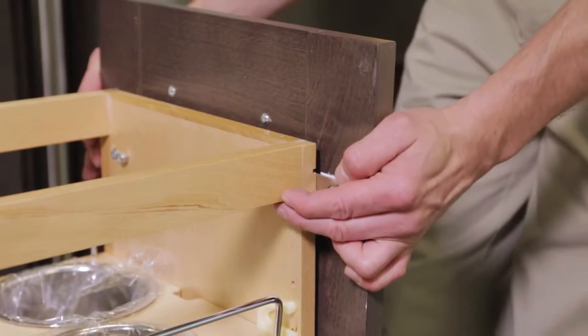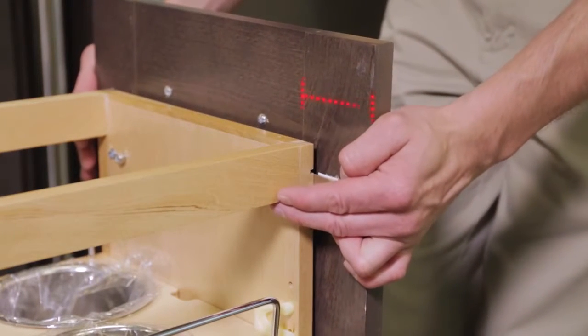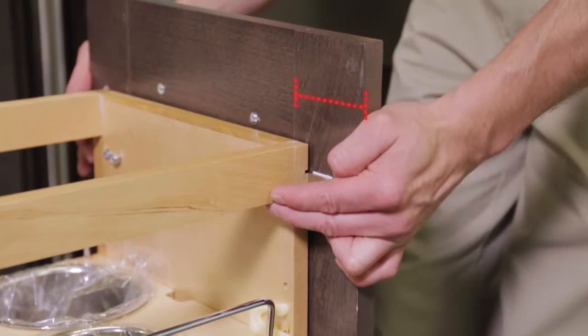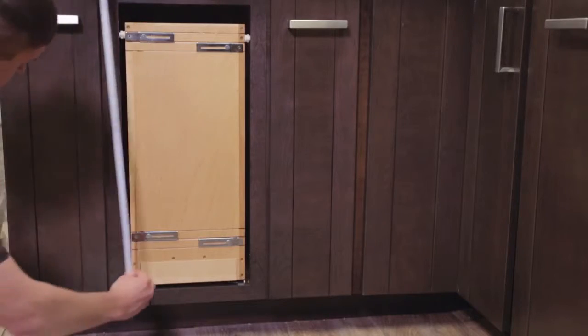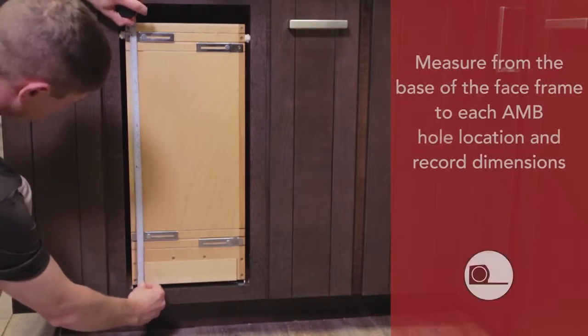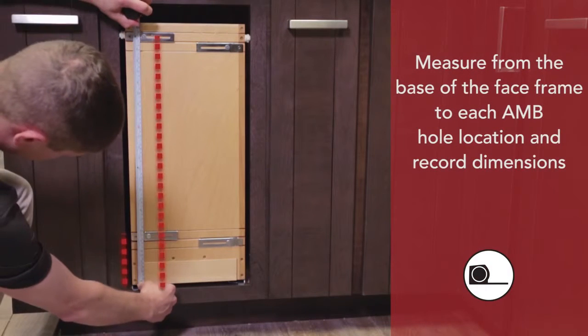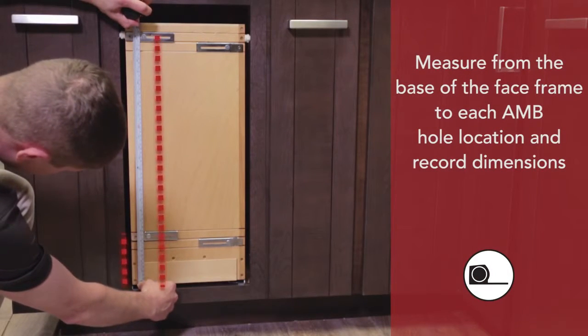Pull the adjustable door mounting brackets to ensure that you are mounting the thick portion of your cabinet door. Measure from the base of the face frame up to each AMB hole location and record those dimensions.